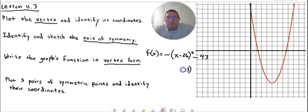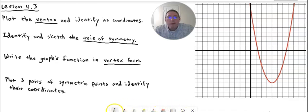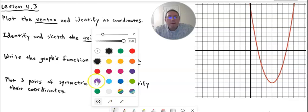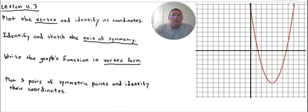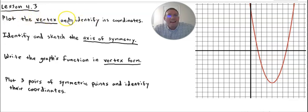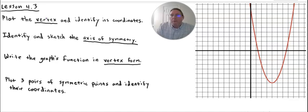Now that we've got a preview of what we're supposed to do, let's jump right in — this is going to be pretty easy. I'll switch to a purple color here. The first thing on the graph says: plot the vertex and identify its coordinates. To plot the vertex, all we have to do is go to the picture and put a dot at the vertex.